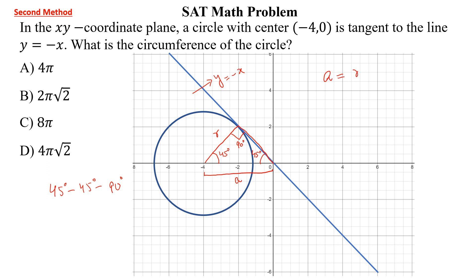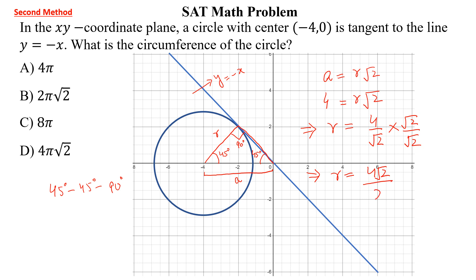So this is a 45-45-90 triangle. For this triangle, a = r × √2. Now a = 4, so r × √2 = 4, which gives r = 4 ÷ √2. Multiplying and dividing by √2, r = 4√2 ÷ 2 = 2√2. Therefore C = 2πr = 4π√2, and this is the required answer.